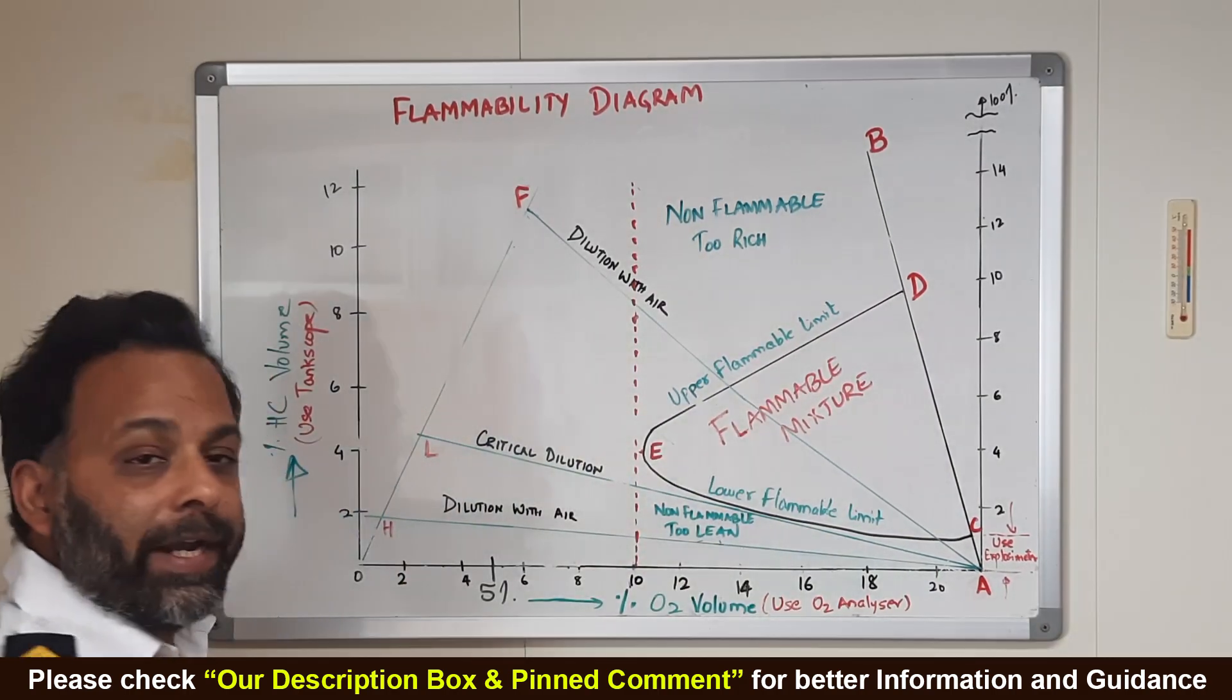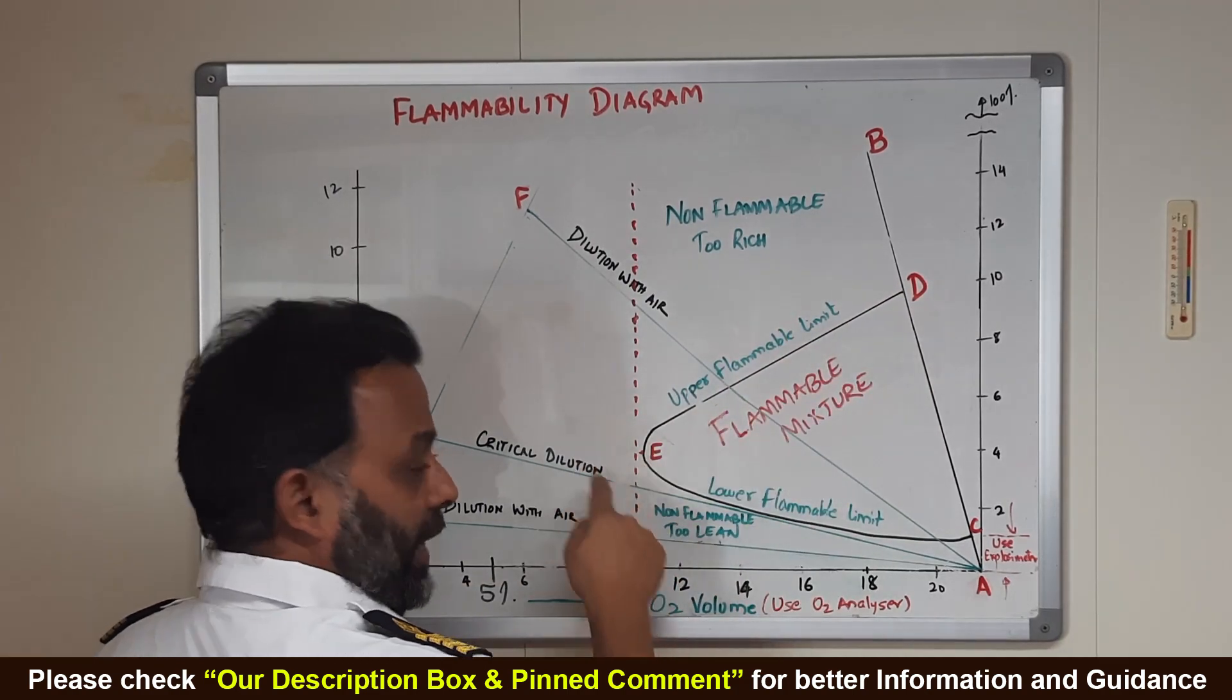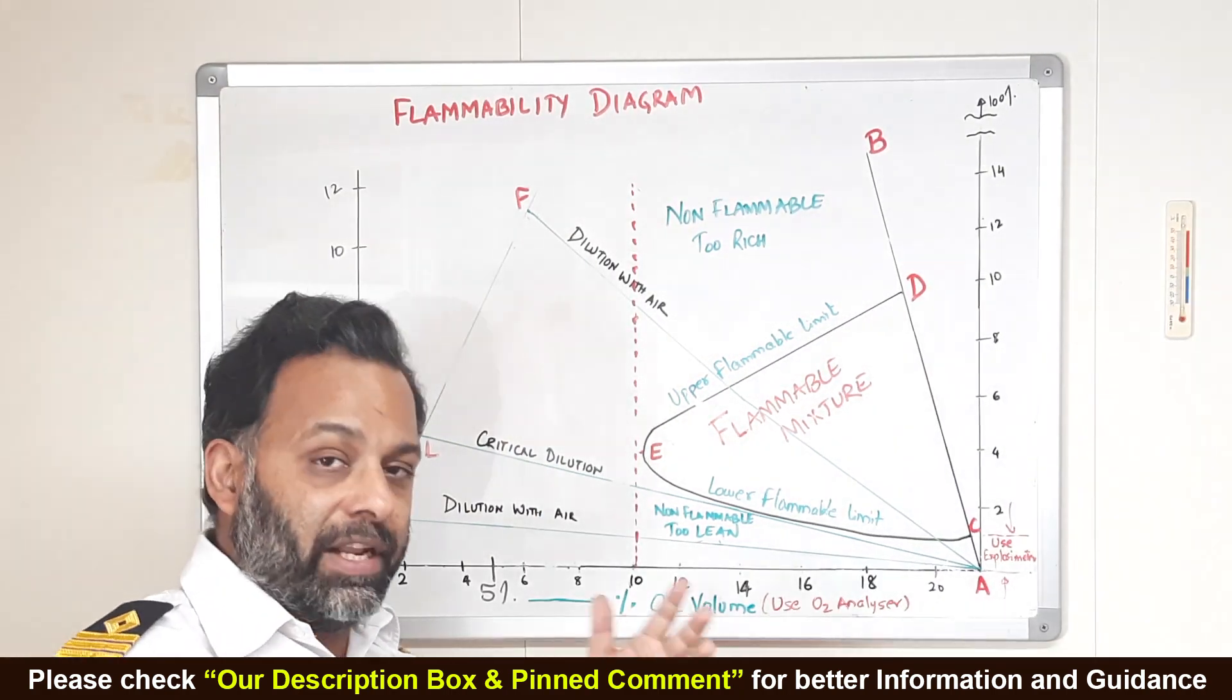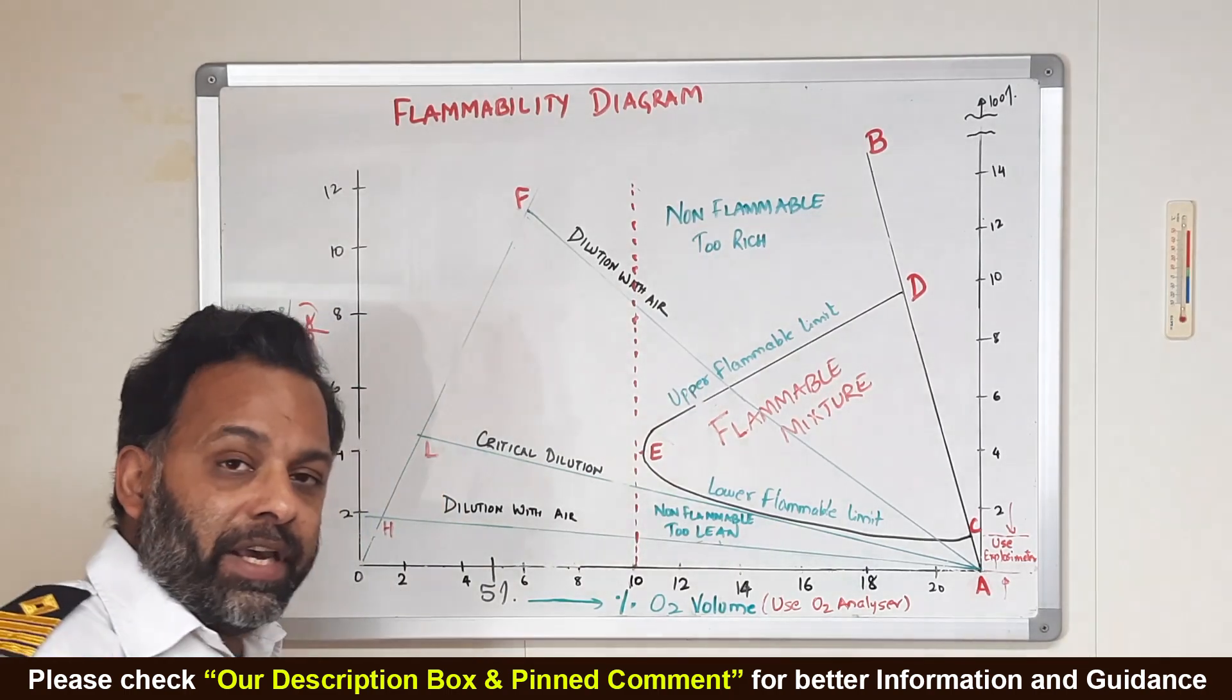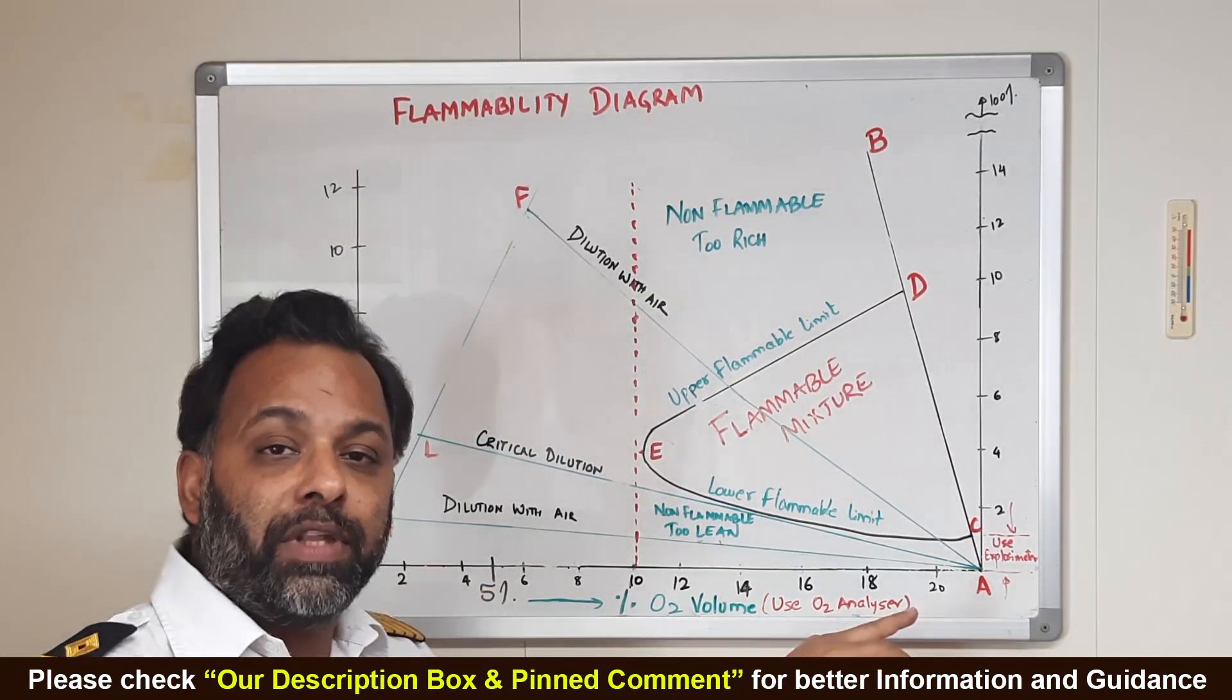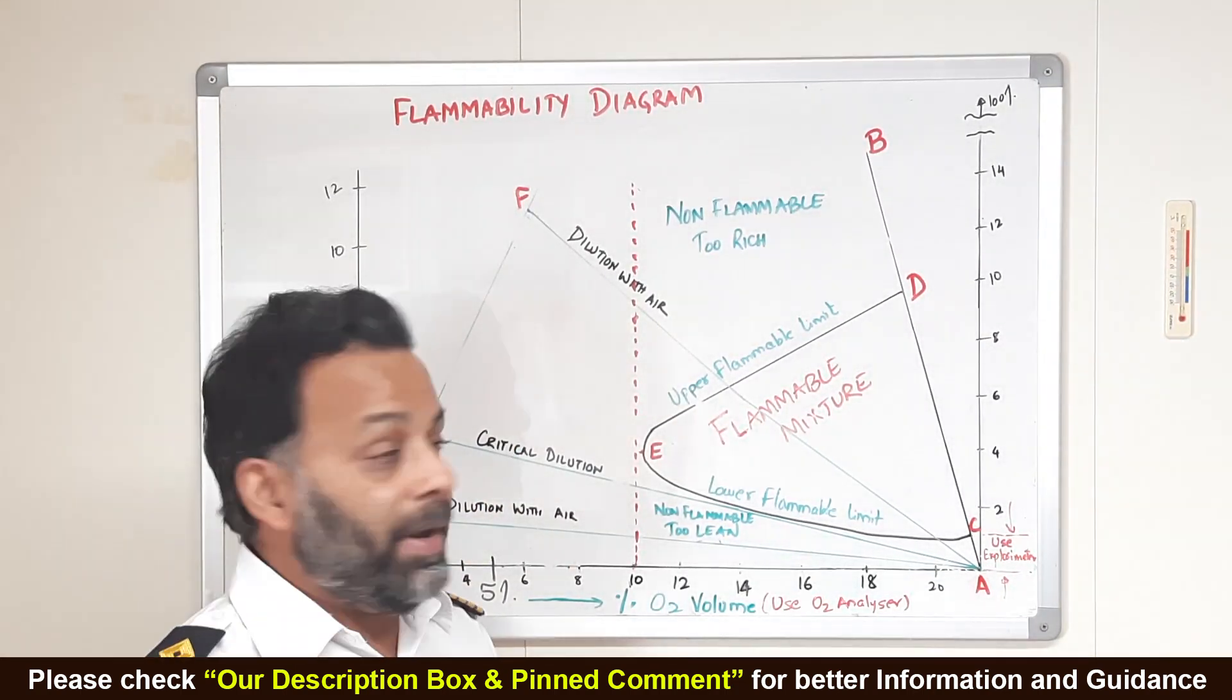So please do not get confused by how complicated it looks. There is nothing complicated about it. It is very simple. When we go on the left of this diagram, we start inerting, we reduce the amount of oxygen. At point E is the minimum oxygen at which our fire can sustain. This is around 11%, IMO says 8 and we are following 5%. So we keep on inerting until the oxygen level in the tank is less than 5%. And then it is absolutely safe to carry petroleum products. When we are diluting with air during discharging or when we are preparing our tanks for tank entry, we keep on inerting with IG and then we dilute with the air. Idea is to avoid this flammable region, avoid this explosive region. I hope it can be of some help. Thank you.